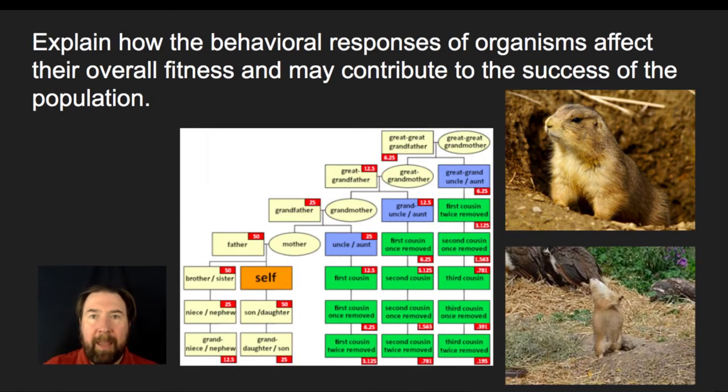Some behaviors affect the overall fitness and may contribute to the success of the population. There are many instances where it's very obvious that an individual has done something and allows them to survive and reproduce. Avoiding a predator, finding a food source, if you get a stimulus and then you either move towards or away from something that is either beneficial or harmful to you, that's very obvious.